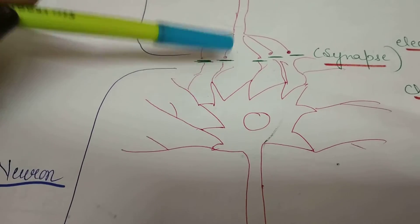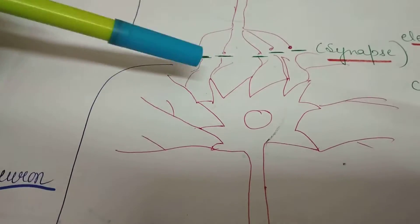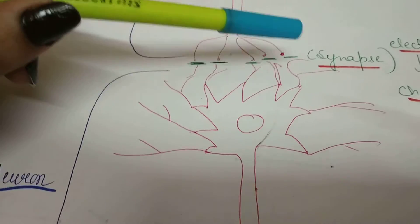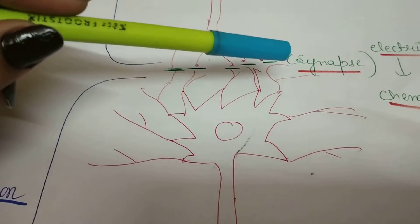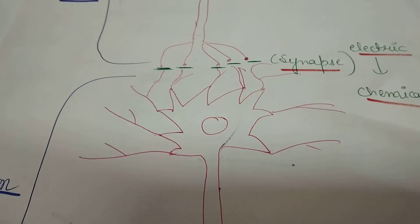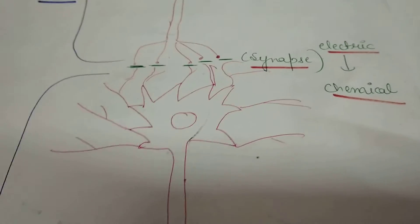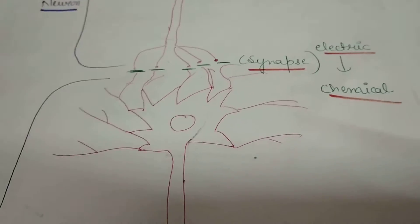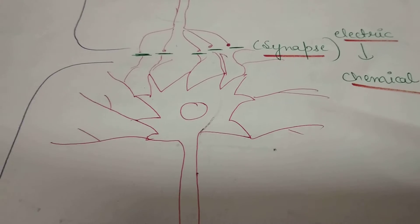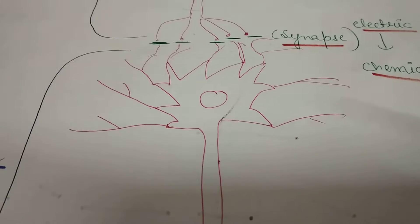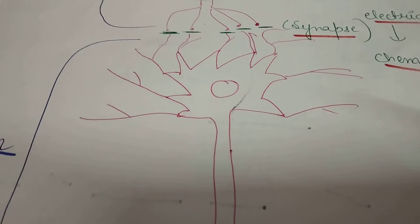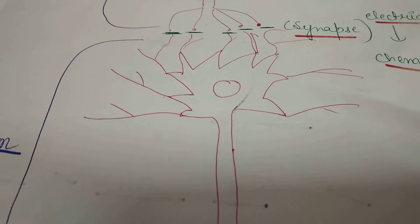Via synapse. This green color represents the synapse here, and it transmits electrical signal into chemical signal, then gives it to the dendrites of the other neuron.